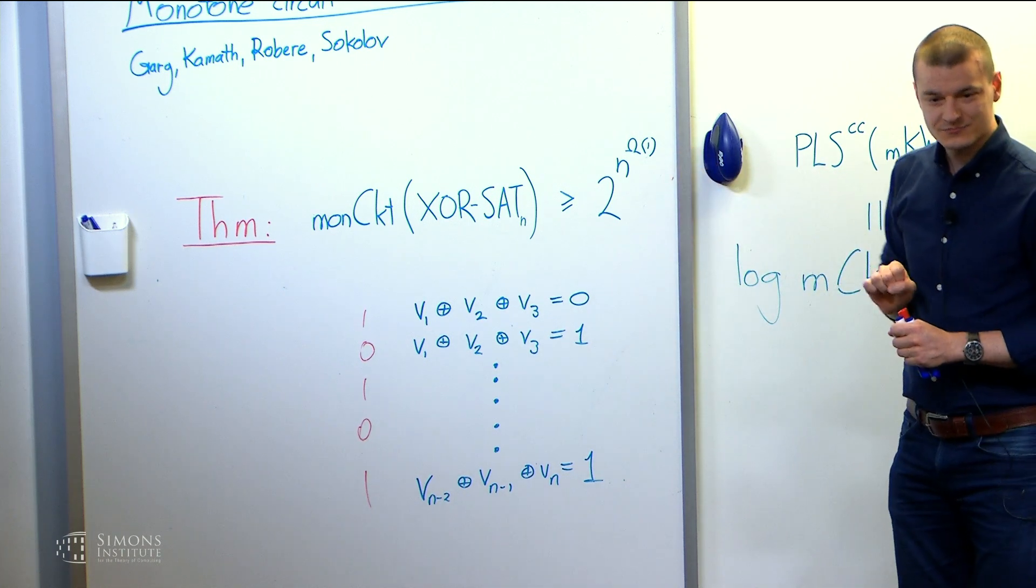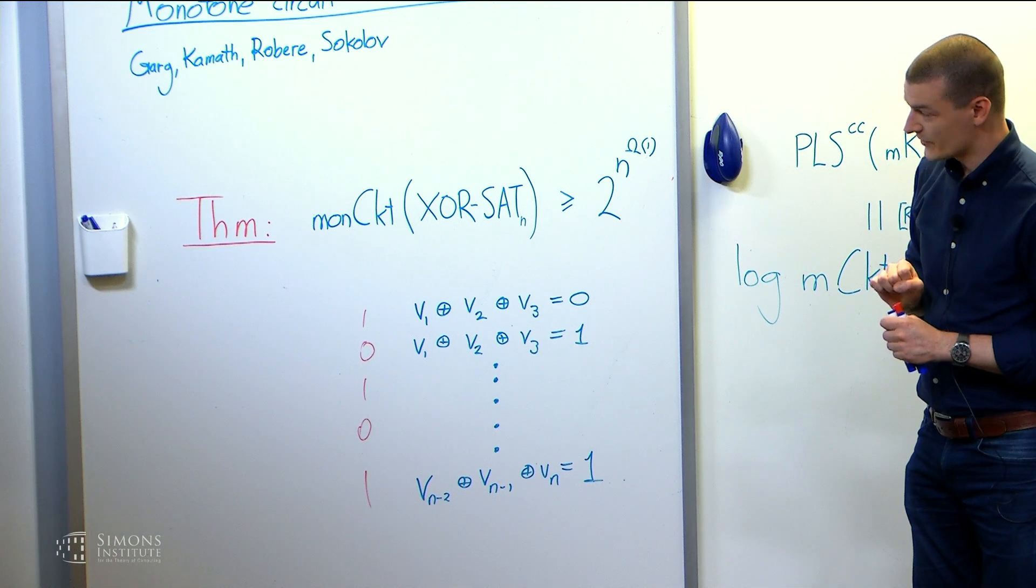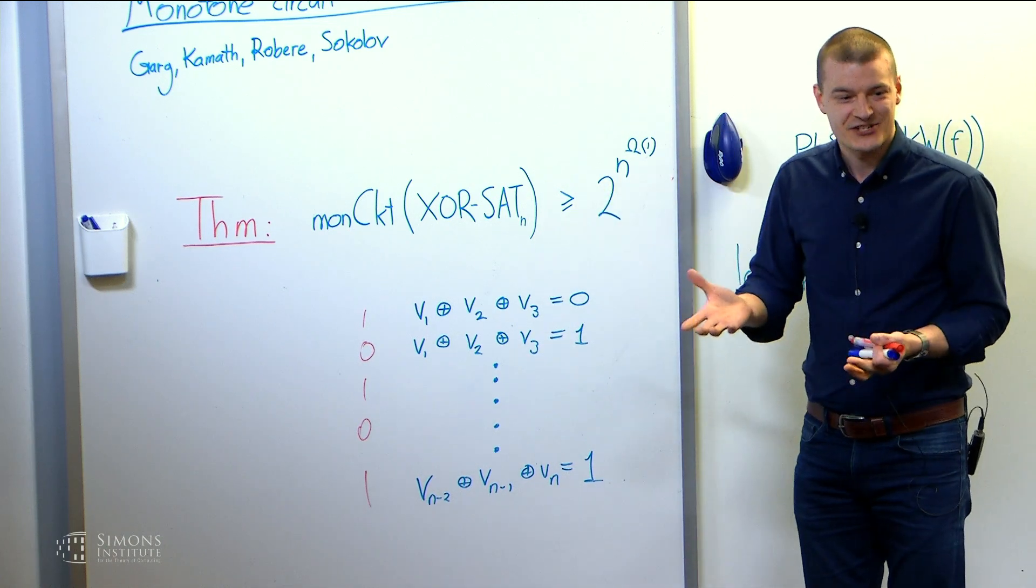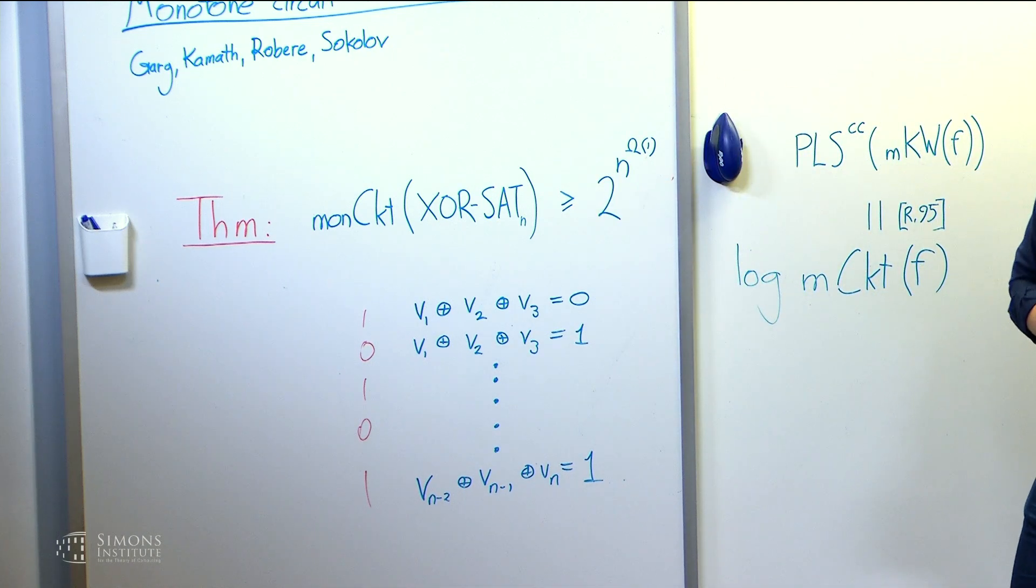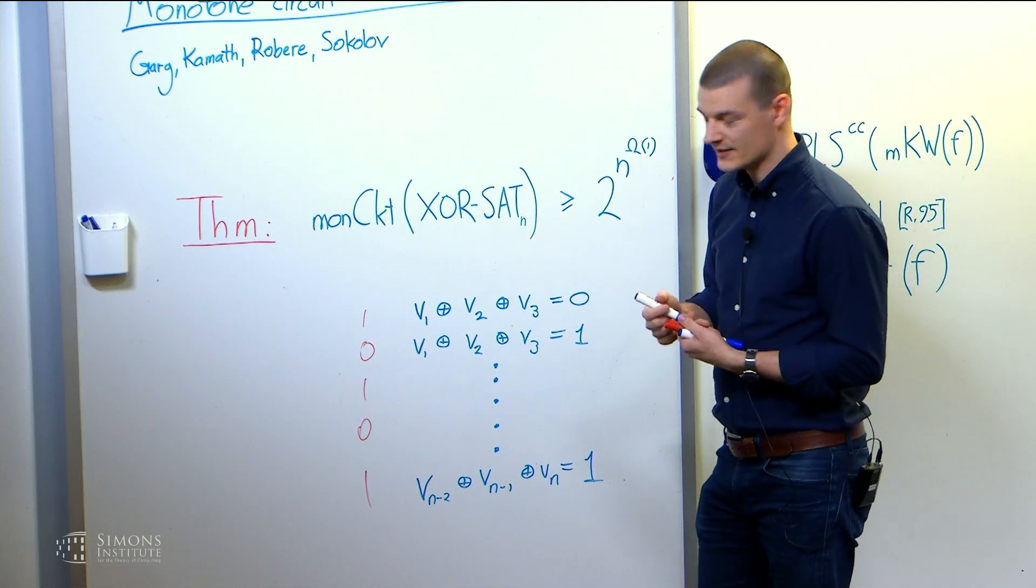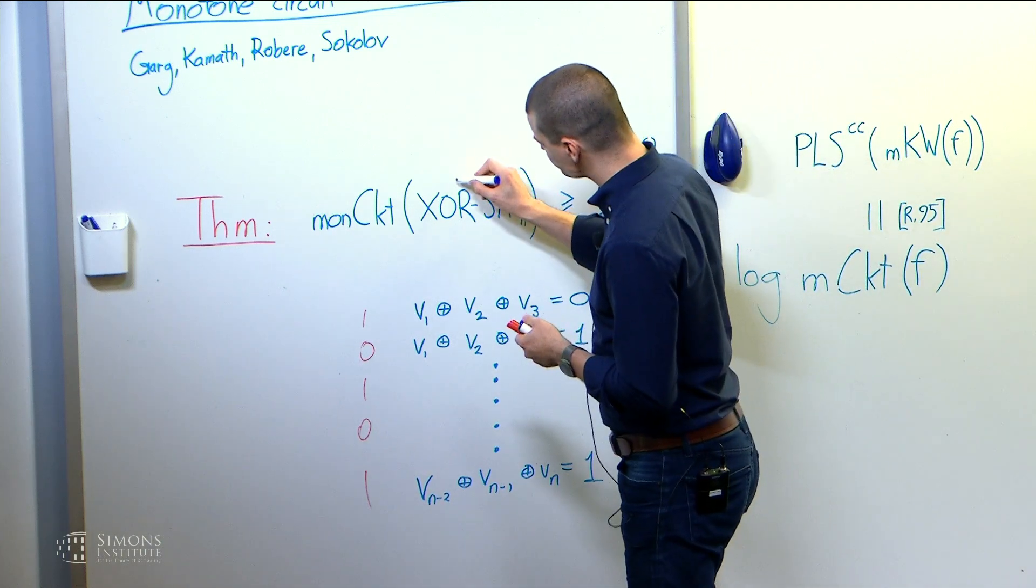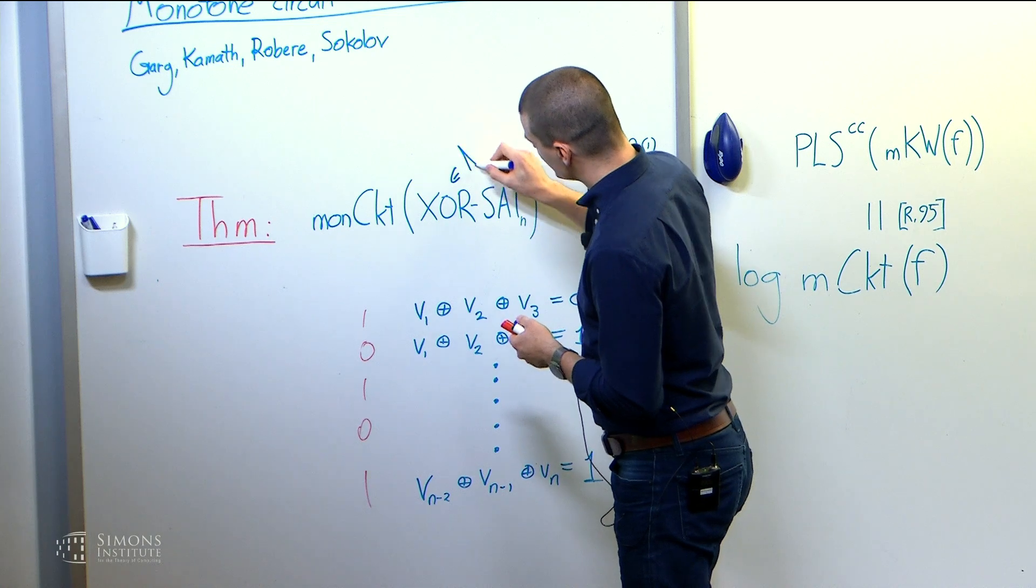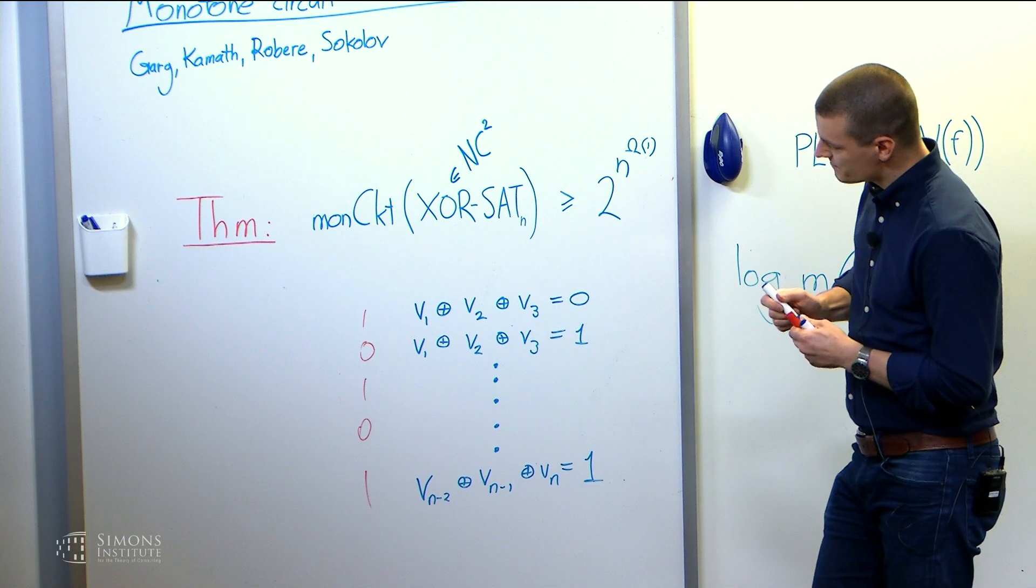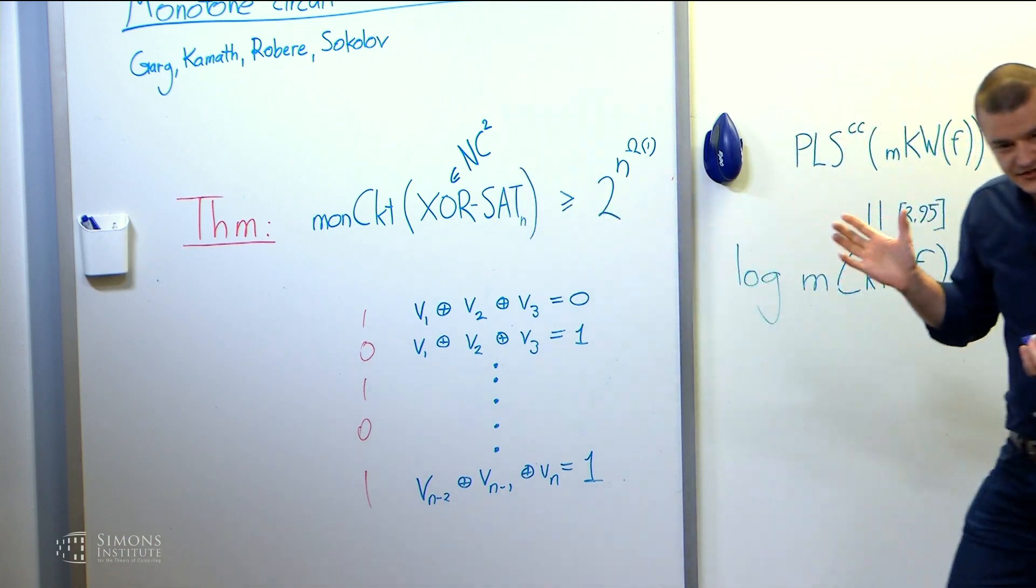So we can show an exponential lower bound for XORSAT. It's interesting because XORSAT is a really easy function. So Gaussian elimination can solve it for you. In fact, there are really efficient algorithms for linear algebra, classical results, and in particular, the XORSAT is even in NC2. So speedy parallel algorithms.